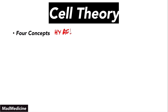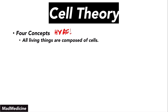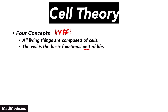The first of the four concepts is that all living things are composed of cells. You cannot have life — you cannot have living components without cells being present. Number two is that the cell is the basic functional unit of life. It is not the most basic unit of life, since you could argue proteins are more basic, but everything happening that allows an organism to live is happening within the cell. Therefore, the cell is the basic functional unit of life.